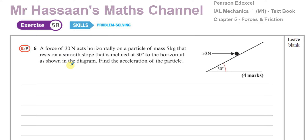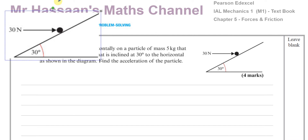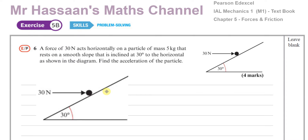It's quite a simple question. One of the students that I teach asked me to answer this question for him. It says a force of 30 newtons acts horizontally on a particle of mass 5 kilograms that rests on a smooth slope inclined at 30 degrees to the horizontal, as shown in the diagram. Find the acceleration of the particle. I'm going to take a copy of this diagram.